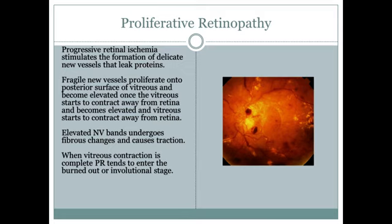Proliferative retinopathy is progressive retinal ischemia that stimulates formation of delicate new vessels that leak protein. The retina becomes so ischemic that it begins forming new vessels, which start to leak.